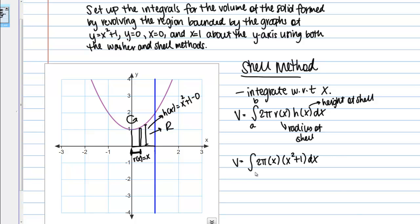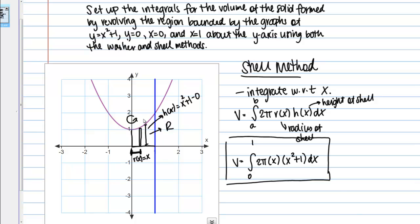The bounds should be X values since we're integrating with respect to X. The region spans from x = 0 to x = 1, giving us: V = ∫ from 0 to 1 of 2π · x · (x² + 1) dx. For this particular problem, the shell method was easier to use than the washer method. When deciding which method to use, consider the shape of the region, which variable is easier to integrate with respect to, and which method produces the simpler integral.